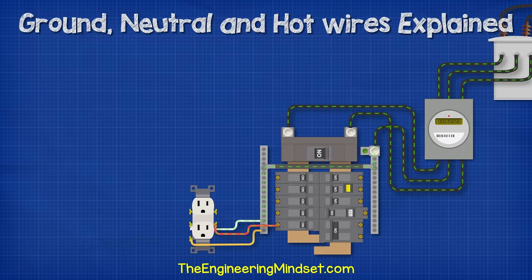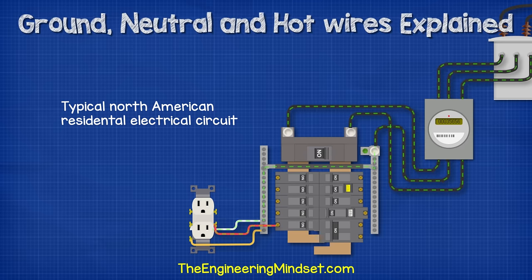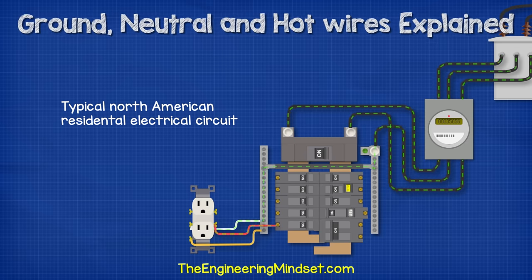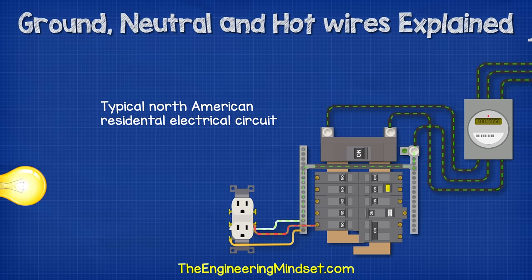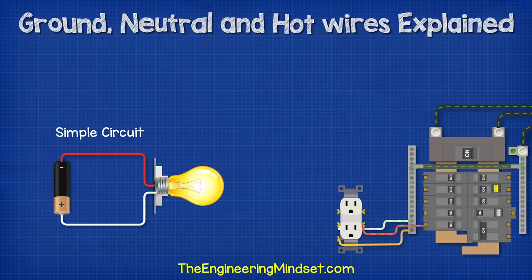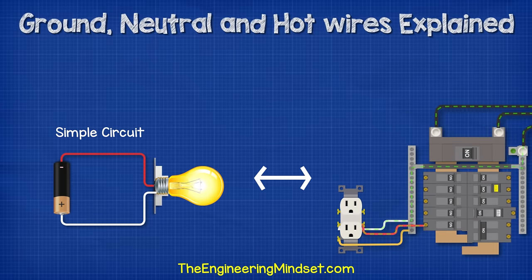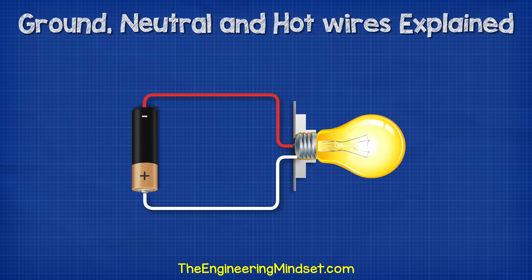We're going to be looking at the hot, neutral and ground wires for a typical North American residential electrical circuit. First we'll see a really simple circuit to understand how it works. Then we're going to apply this knowledge to a complex residential installation.